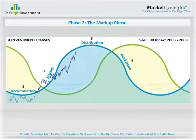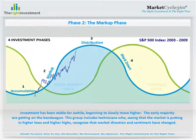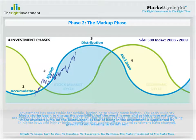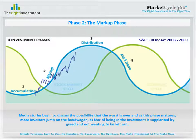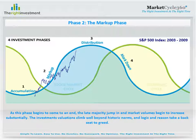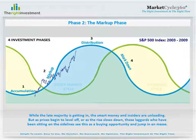The second phase is called markup. During the markup phase, the investment has been stable for a while and is beginning to slowly move higher. The early majority are getting on the bandwagon. This group includes technicians who, seeing that the market is putting in higher lows and higher highs, recognize that market direction and sentiment have changed. Media stories begin to discuss the possibility that the worst is over. And as this phase matures, more investors jump on the bandwagon, as fear of being in the investment is supplanted by greed and not wanting to be left out. As this phase begins to come to an end, the late majority jump in and market volumes begin to increase substantially. The investment's valuations climb well beyond historic norms, and logic and reason take a back seat to greed. While the late majority is getting in, the smart money and insiders are unloading.